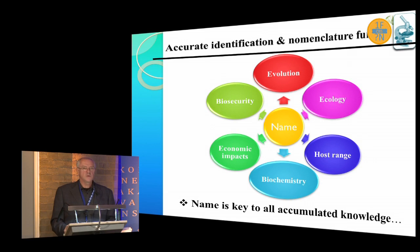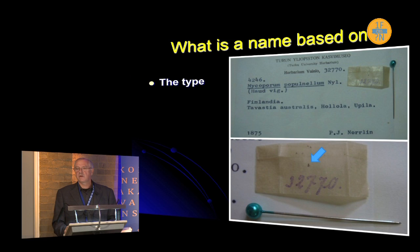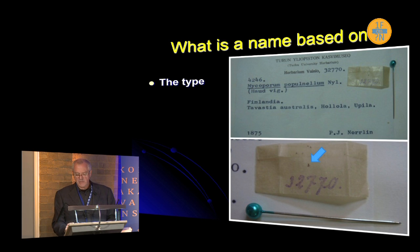Paul, at the end of my talk, when we have one name and we want to search a fungus and all the information on it, are we still going to have to search for two names in the database? Perhaps you can mention that at the end. So, what is the name of any fungus based on?